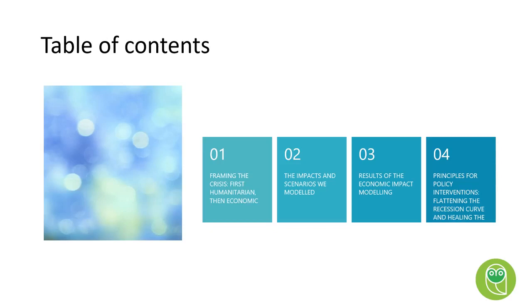First, we will start with framing the crisis — it is first a humanitarian crisis and then an economic one. Secondly, we will discuss the impact and scenarios we modelled, going into detail about the economic modelling we did as a team. Then thirdly, the results of the economic impact modelling, and finally, looking at the policy interventions.